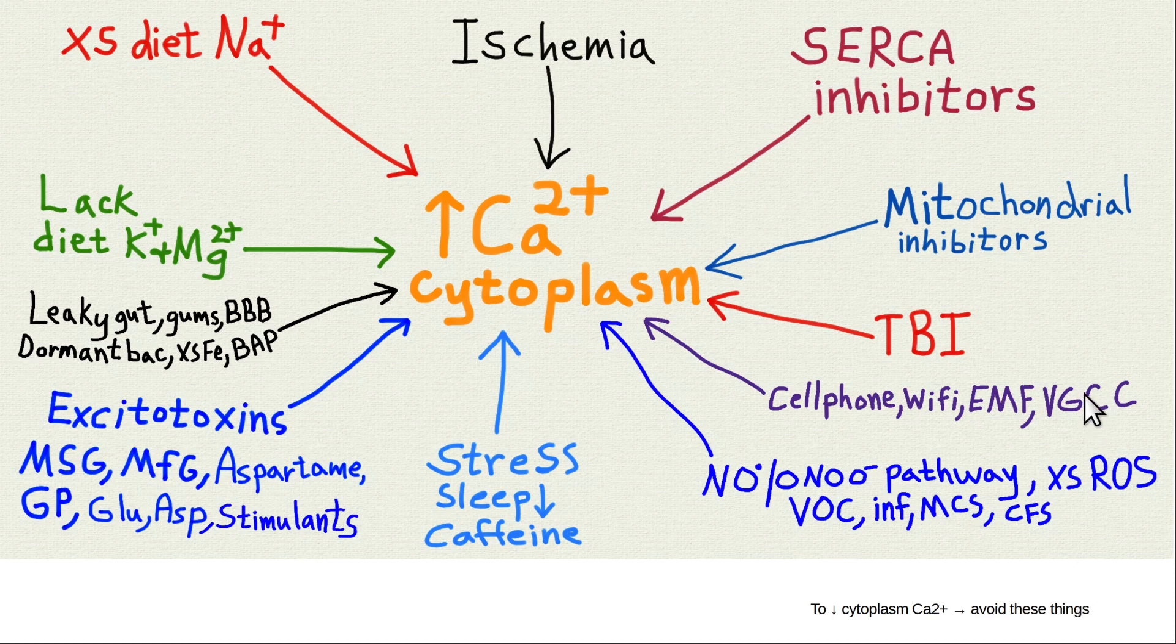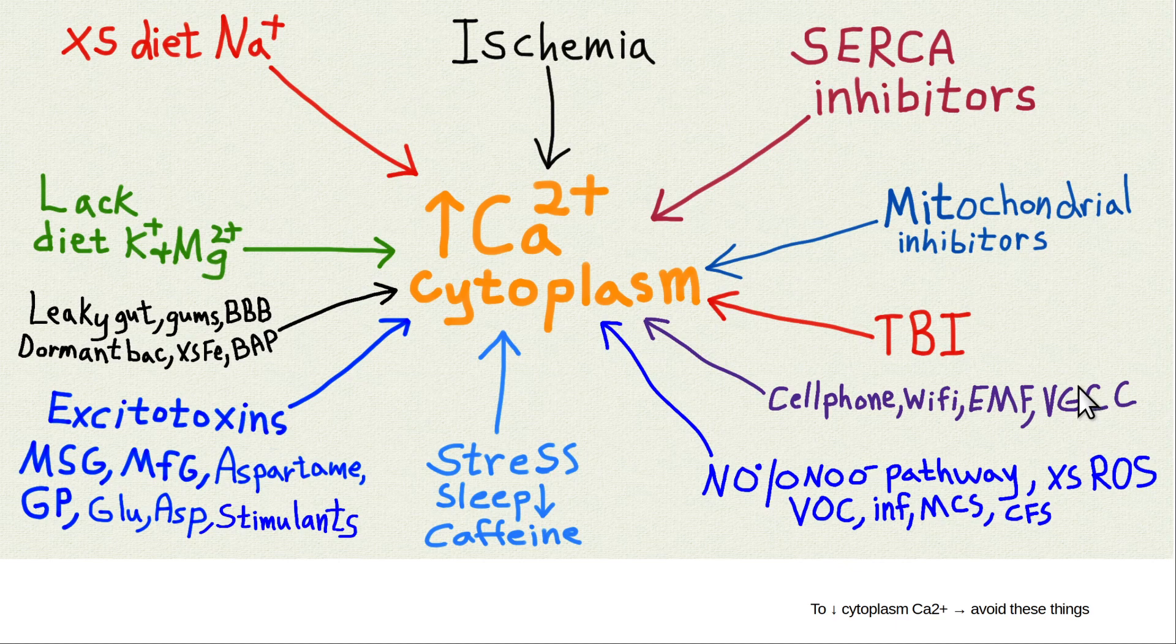This video is called Do All Roads Lead to Rome and to Calcium? I've been studying a lot about calcium signaling in brain cells and neurons, and I'm seeing new interesting things worth talking about. The key point of this whole talk is almost all the bad things that are happening to brain cells lead to increased calcium in the cytoplasm of the neuron.